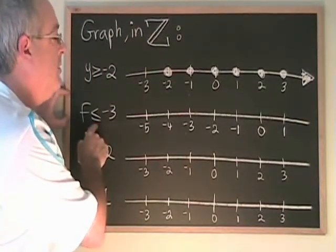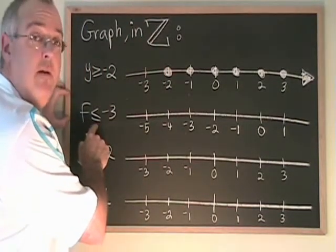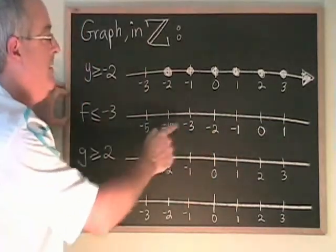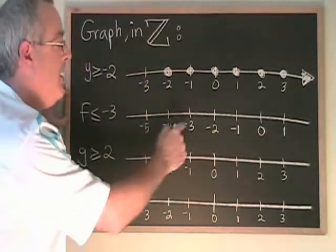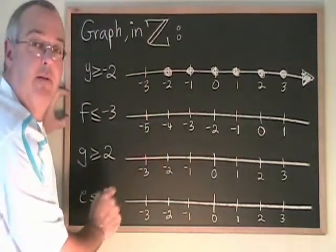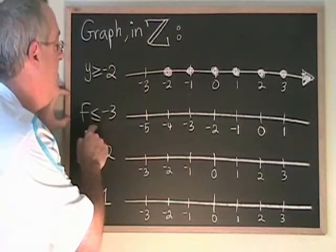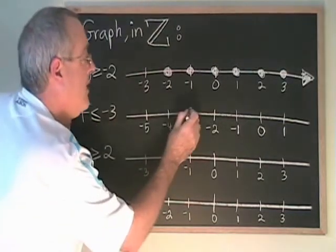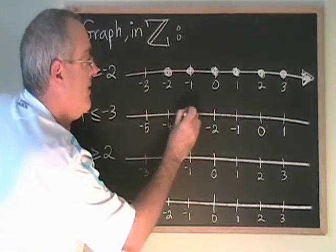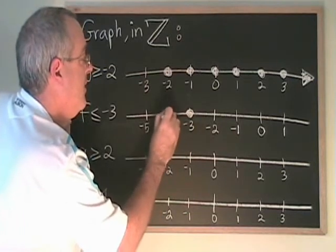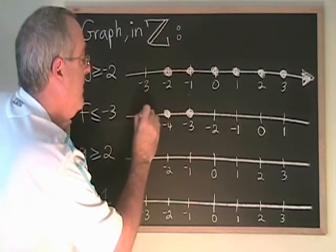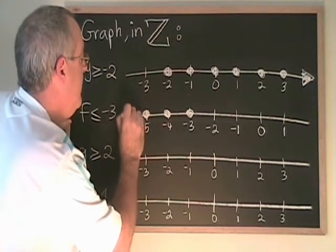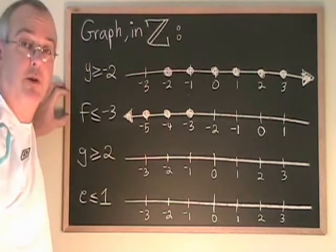F less than or equal to negative 3. Again, I have drawn my number line a little differently so that numbers further to the left will show. The numbers less than or equal to negative 3 include negative 3 itself, negative 4, negative 5, and on and on forever in the negative direction.